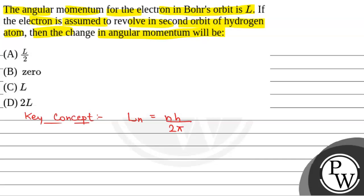And we know that angular momentum L equals mvr. Now, r in nth orbit is equal to r0 n square by z, i.e. r in nth orbit is directly proportional to n square.